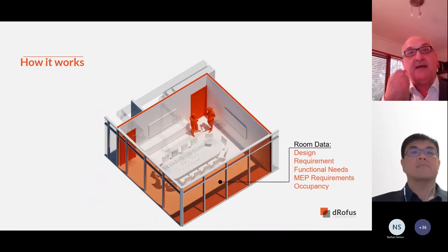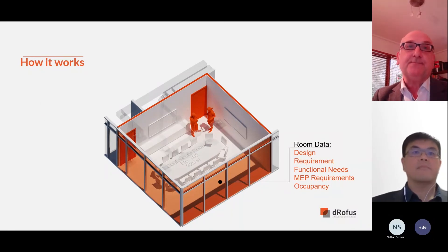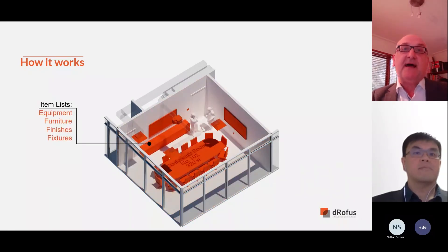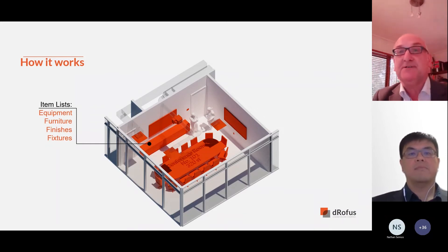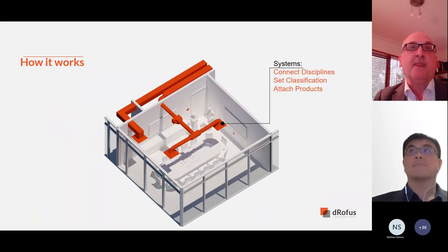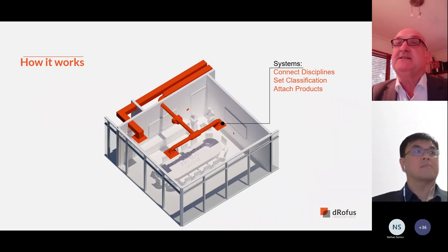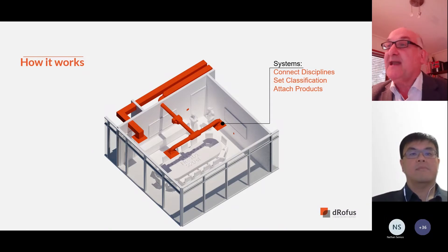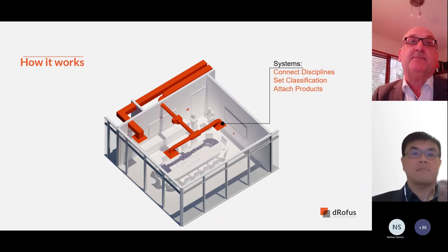From basic room properties such as room name, number and programmed area, on to room data and functional requirements — everything from occupancy count to door hardware to daylight requirements. You name it, it can be recorded and validated in Dorofus. Ideal lists allow different parties to take responsibility and ownership of the assets they're responsible for, whether it be equipment, furniture, fixtures or finishes. This can happen both within and across rooms in your building. For example, engineers can plan systems, components and their classifications, as well as installation requirements and schedules — and remember, all of this is linked to the BIM.